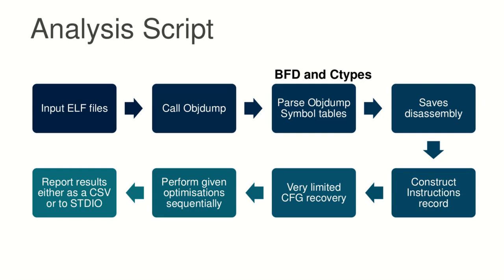To figure out all these variables and determine what's important, I wrote a simple Python script. You give it an ELF file as input, and it uses Python subprocess to call objdump, requesting the static symbol table, dynamic symbol table, and the disassembly. It saves the disassembly, and then the script takes actions from the command line arguments. Some of these actions require constructing what I call an instruction record, and some don't.